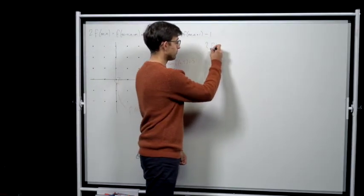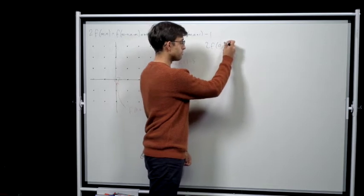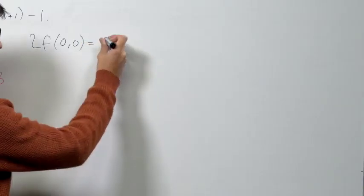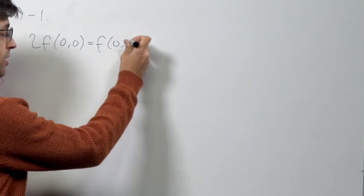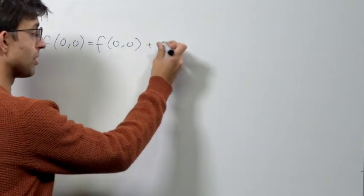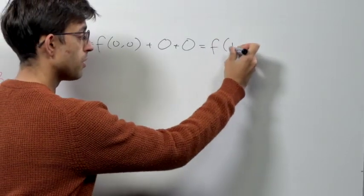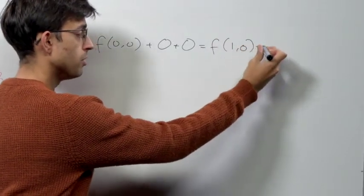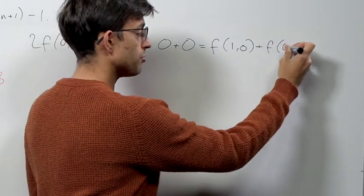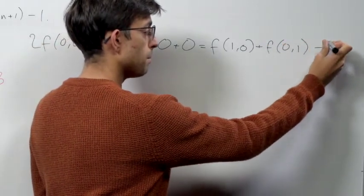We have 2f(0,0) is equal to f(0,0) plus 0 plus 0, and this is also equal to f(1,0) plus f(0,1) minus 1.